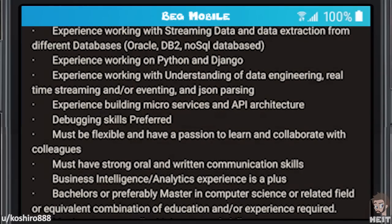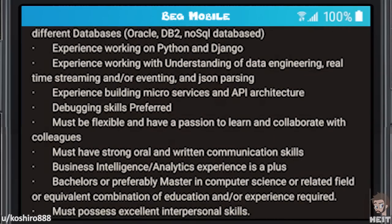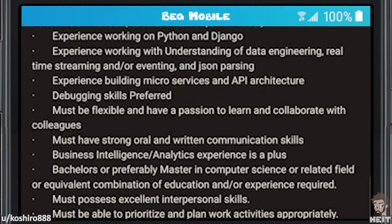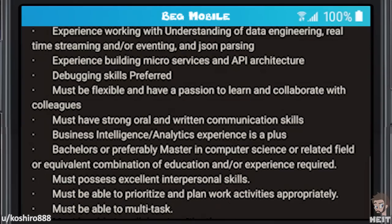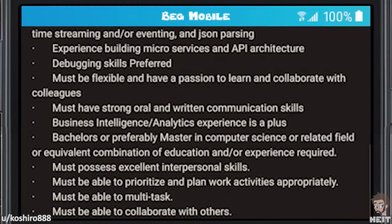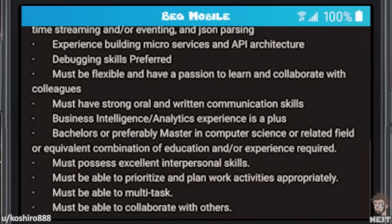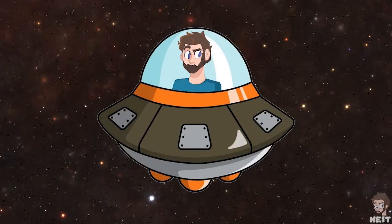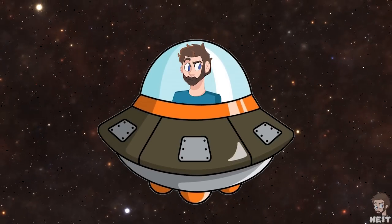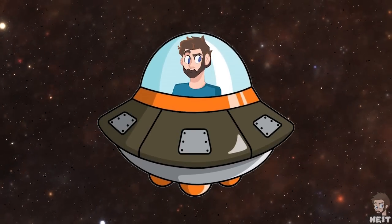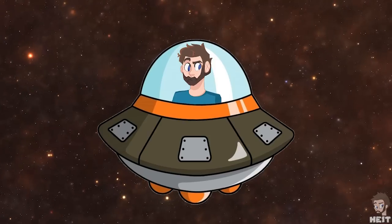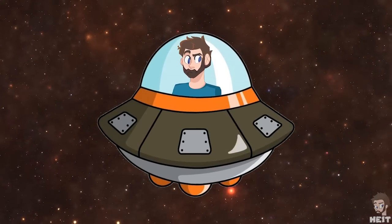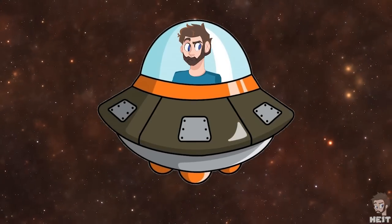Bachelor's or preferably master's in computer science or related field, or equivalent combination of education and experience required. Must possess excellent interpersonal skills, must be able to prioritize and plan work activities appropriately, must be able to multitask, must be able to collaborate with others. And I'm sure that list goes on and on. It's amazing how you need to possess all of those qualifications that would normally get a person paid, but they just want to give you an unpaid internship. I would say I wish them luck finding somebody, but I really don't.